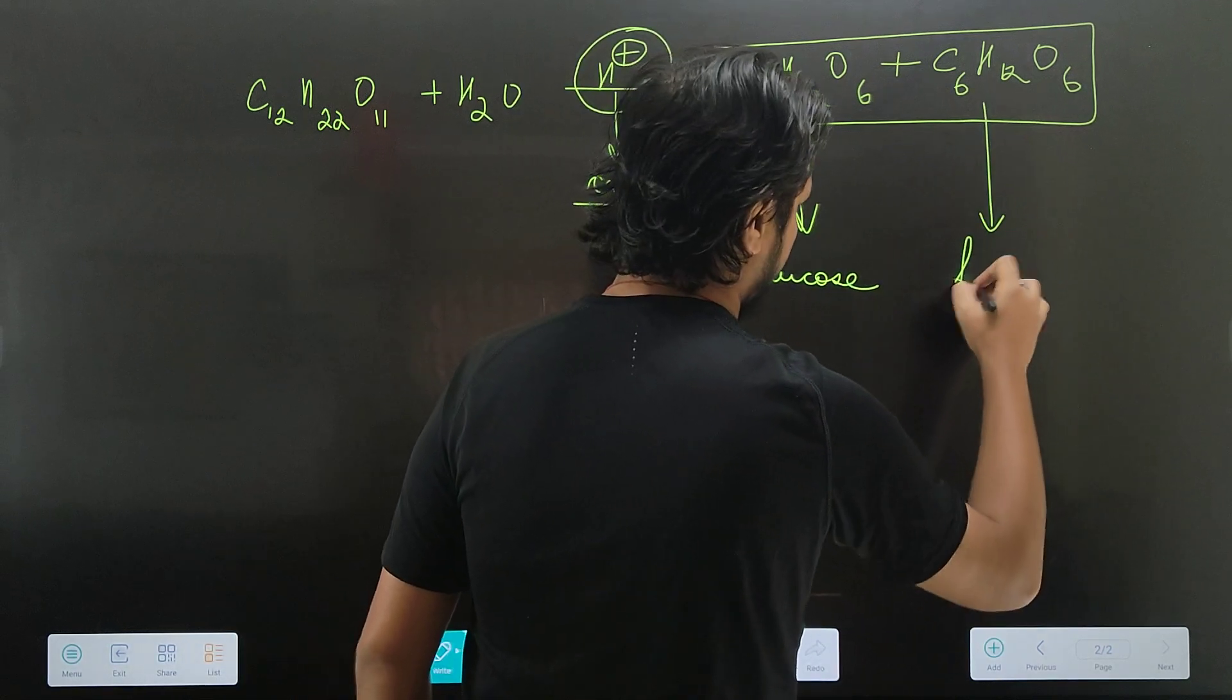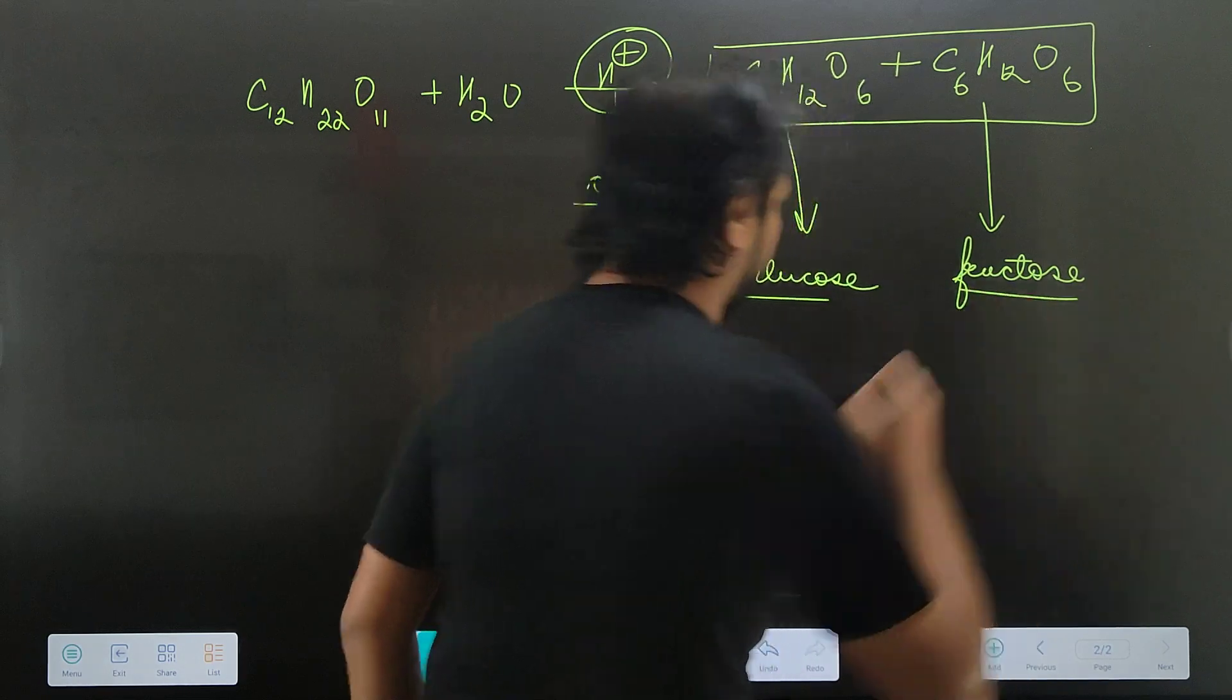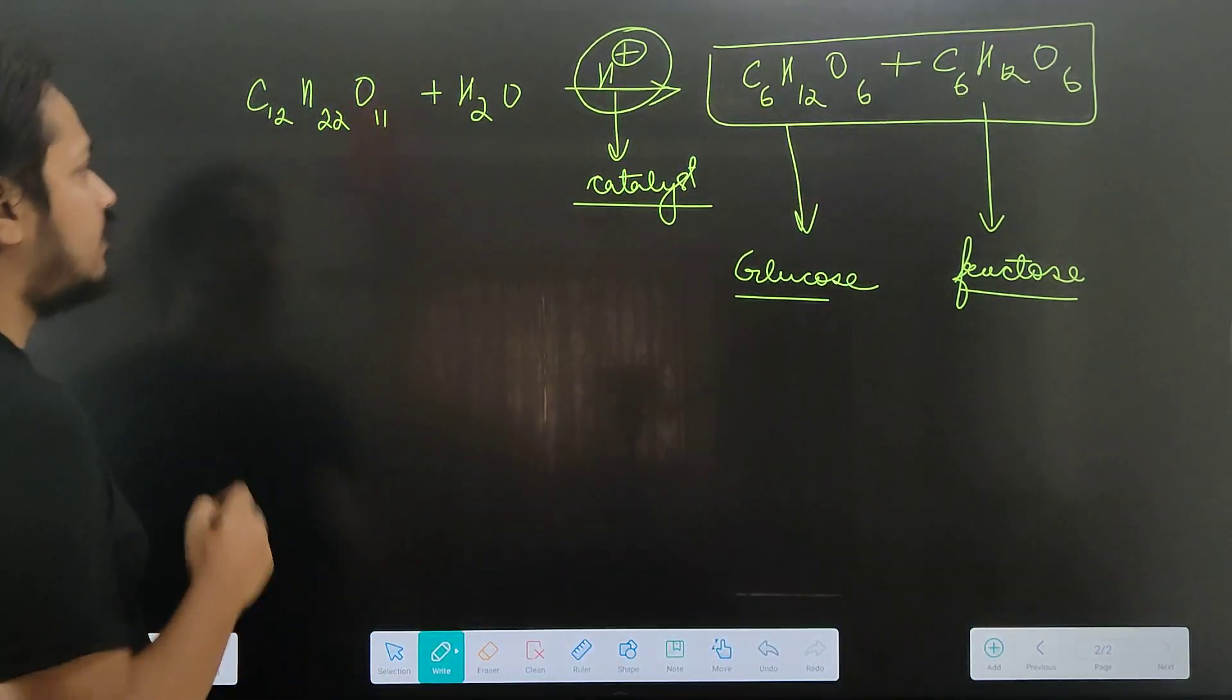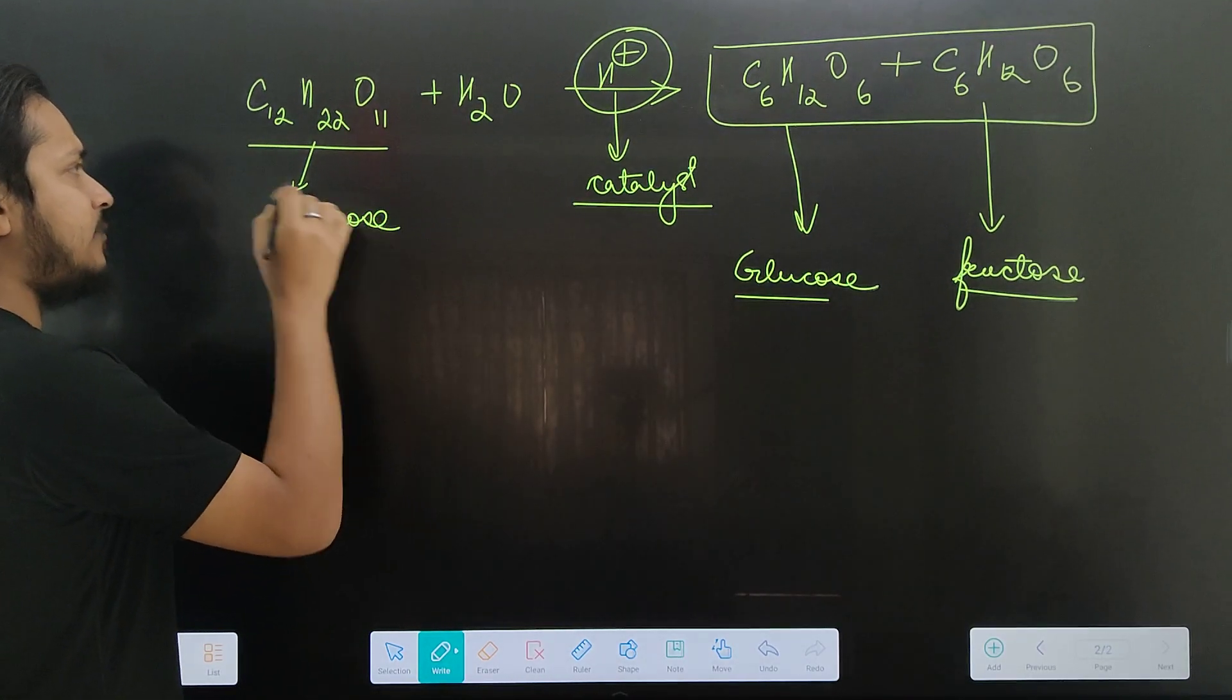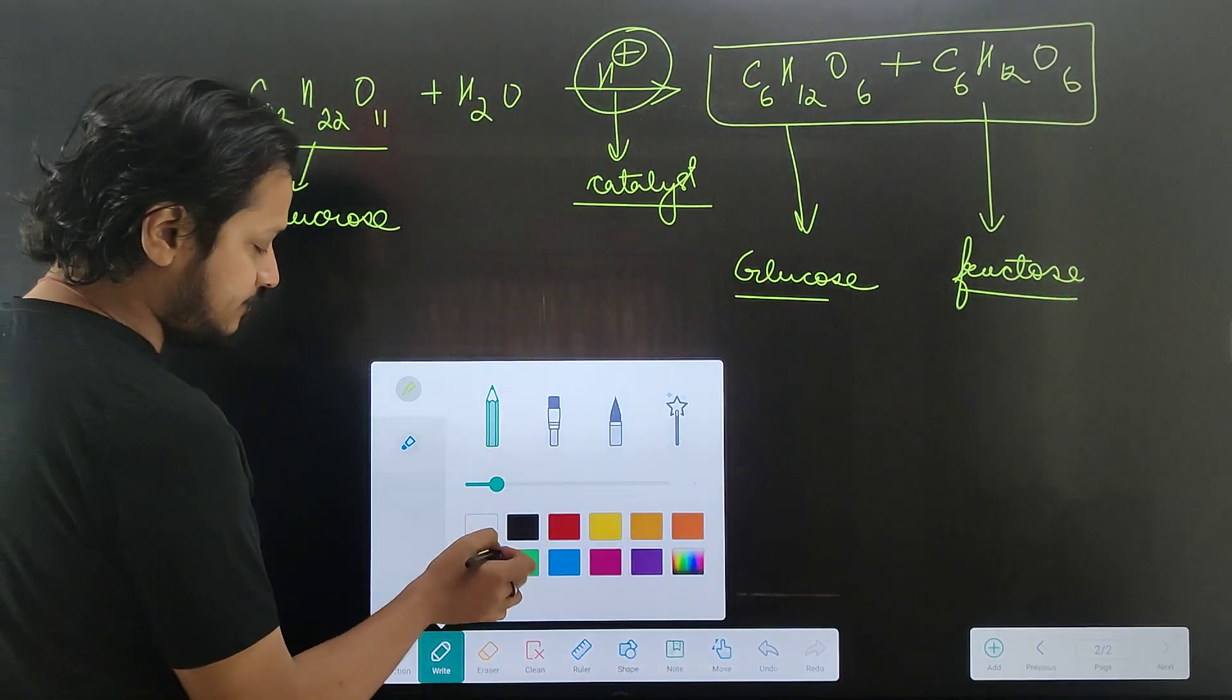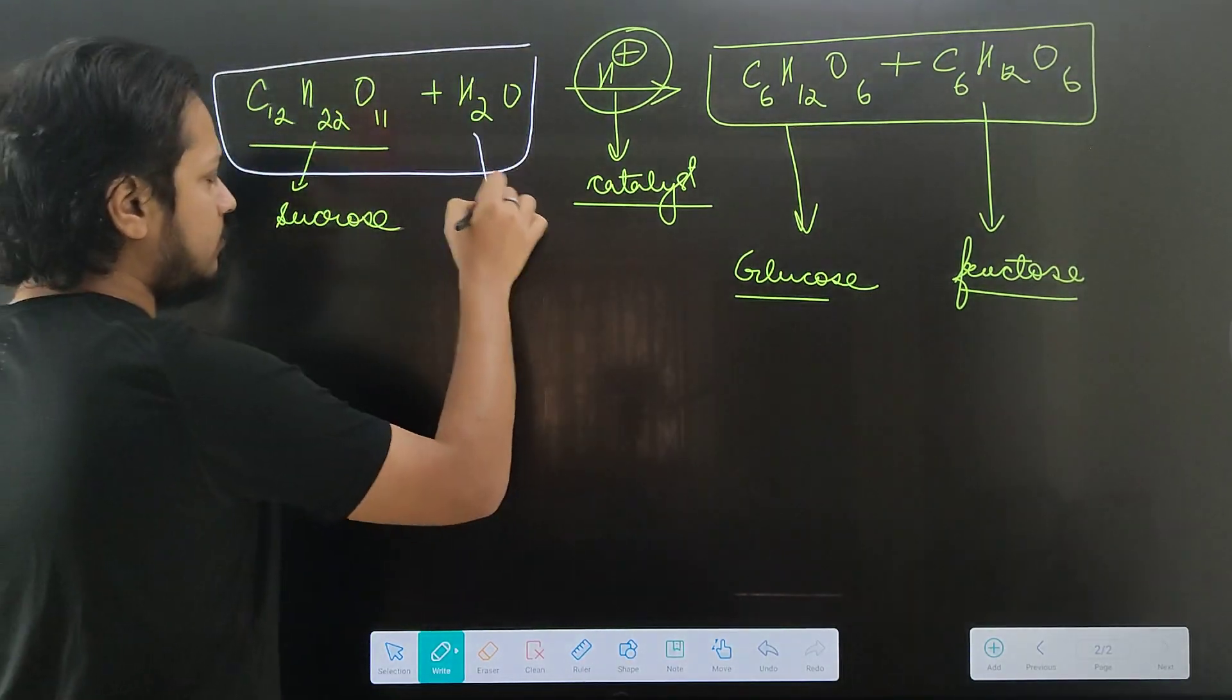This produces glucose and fructose. This is sucrose. The reactants are sucrose and water.